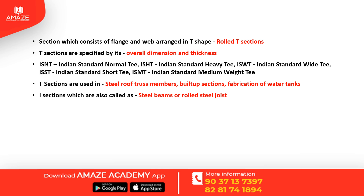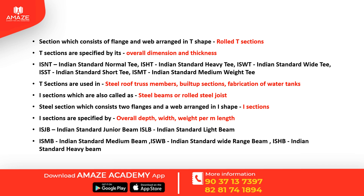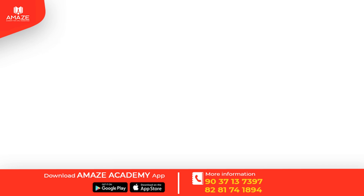I-sections are used in steel beams and rolled steel joists. A steel section consisting of two flanges and a web in the shape of I is called an I-section. I-sections are specified by overall depth, width, and weight per meter length. The types are ISJB (Junior Beam), ISLB (Light Beam), ISMB (Medium Beam), ISWB (Wide Flange Beam), and ISHB (Heavy Beam). I-sections are mainly used in beams, columns, members of steel frames, grillage foundations, and built-up columns.